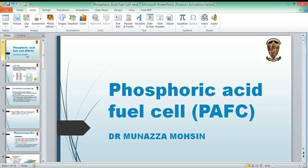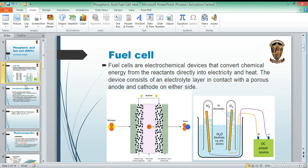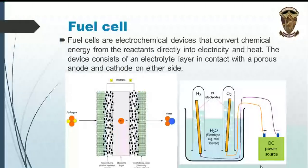In this video I will discuss phosphoric acid fuel cell, which is another type of fuel cell. A fuel cell is an electrochemical device that converts chemical energy from the reactants directly into electricity and heat. The device consists of an electrolyte layer in contact with a porous anode and cathode on either side, along with a catalyst layer.